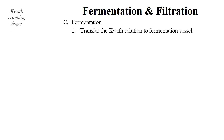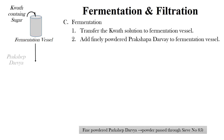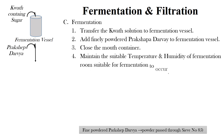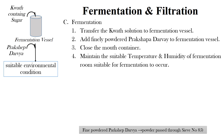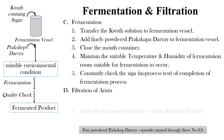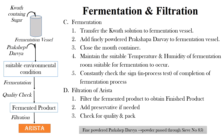The next steps are fermentation and filtration. For fermentation, transfer the Kwath solution to a fermentation vessel. Add finely powdered Prakshepa Dravya to the fermentation vessel. Close the mouth of the container and maintain suitable temperature and humidity in the fermentation room. Constantly check the signs of completion of fermentation. When fermentation is complete, filter the fermented product to obtain the finished product. Add preservatives if needed, check for quality, and then pack.